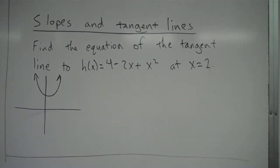Alright, we're going to take a look at a tangent line question. So here I say find the equation of the tangent line to h(x) = 4 - 2x + x² at x = 2.